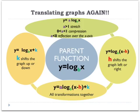Translating graphs of logarithmic functions works exactly like translating any other graph. When a in front is greater than 1, that's a vertical stretch; between 0 and 1, it's a compression; if a is negative, it's a reflection over the x-axis. Adding k on the outside shifts the graph up or down — plus k up, minus k down. Something added inside the parentheses next to x shifts left or right — plus shifts left, minus shifts right. These are exactly the same as with exponential functions, quadratics, absolute value, square root, and cube root.